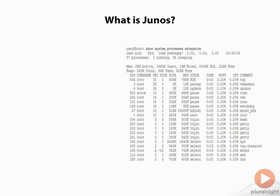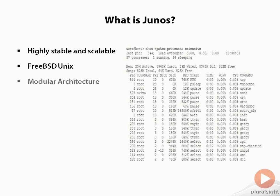So what is the Junos OS? It's different than other network OSs. Juniper has put tremendous resources into building this software from the ground up to produce an operating system that is highly stable and scalable. The Junos software is built on the FreeBSD kernel and retains many of the FreeBSD features that make it a stable and reliable kernel. One of the reasons why Juniper refers to the Junos OS as having a modular architecture is because the Junos services ride on top of the FreeBSD kernel and are completely independent of each other.